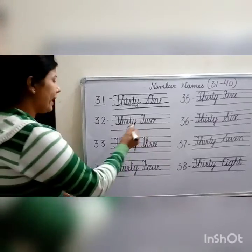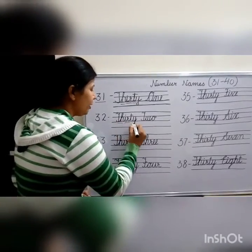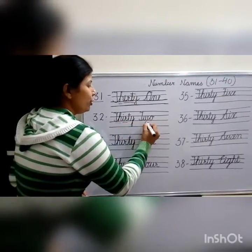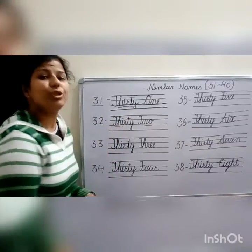Next, thirty-two. T-H-I-R-T-Y — thirty. T-W-O — 2. Thirty-two.